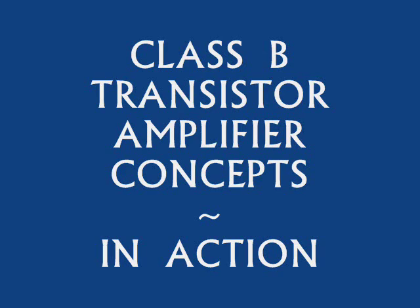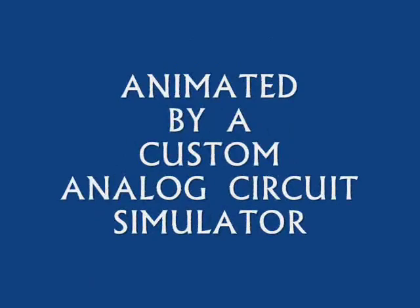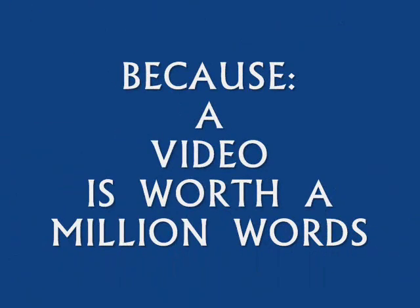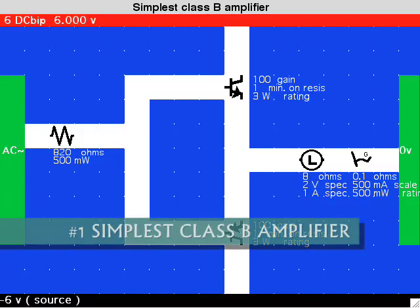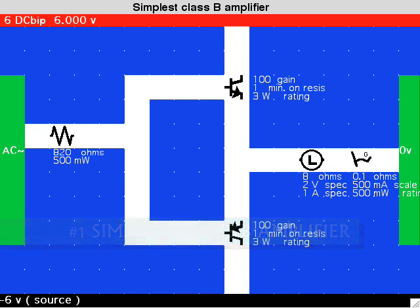Basics of the Class B Amplifier in video animation. It's an effective way to send current back and forth through a load such as a speaker by using a bipolar supply and connecting the load to a center zero ground.